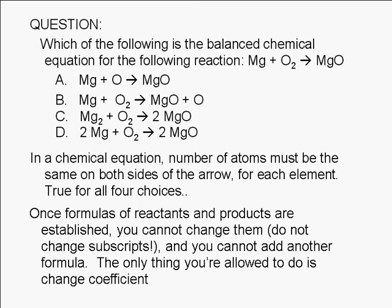Once formulas of reactants and products are established, you cannot change them. By changing subscripts, you change the formulas. This means that you cannot change the subscripts. Therefore, choice A is wrong. Here the subscript of oxygen in O2 was changed.